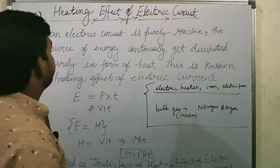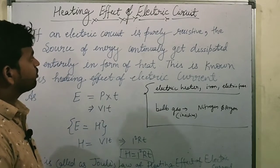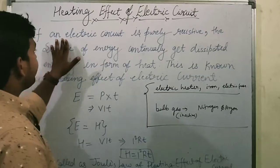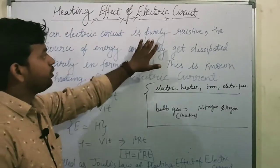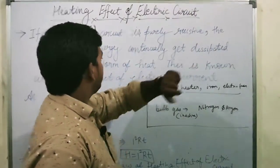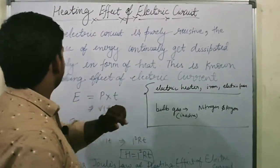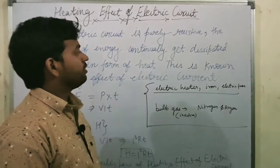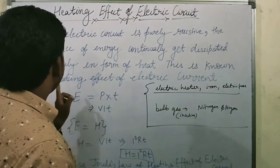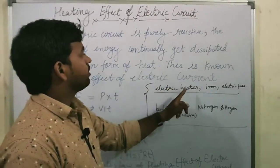Now, heating effect, what happens I will explain. If an electric circuit is purely resistive, the source of energy continuously gets dissipated in the form of heat. This is known as heating effect of electric current.